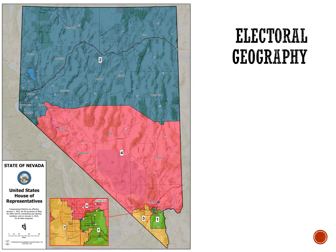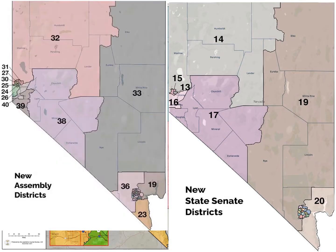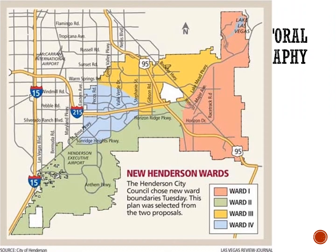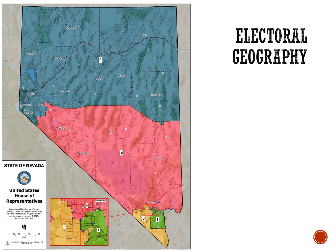People living in rural areas have different concerns and maybe even different values than people living in large urban or suburban areas, and sometimes a single representative may have to speak on all of their behalves. While we've been focusing primarily on the House of Representatives, it's important to note that there are voting districts for smaller areas too — the Nevada State Senate and Assembly, Clark County Commission, Henderson City Council, and the Clark County School District Board of Trustees. Each of these districts is subject to occasional redistricting.